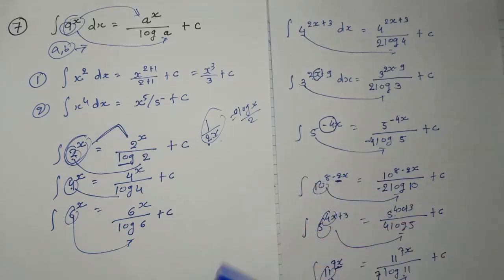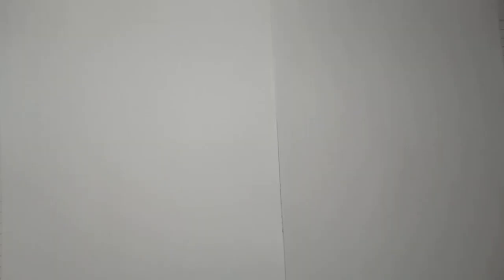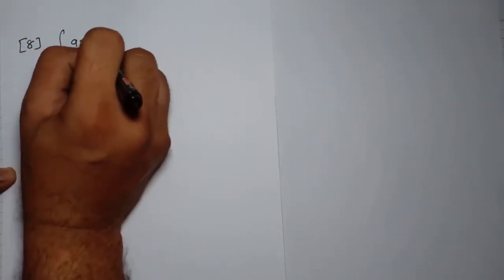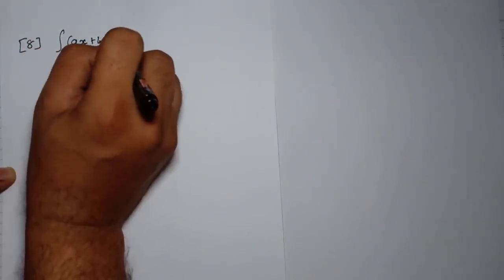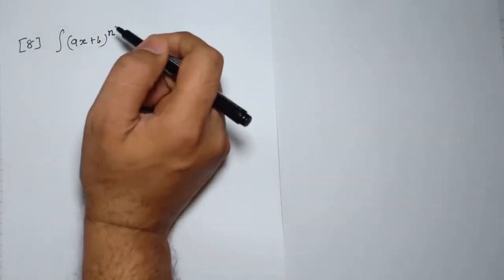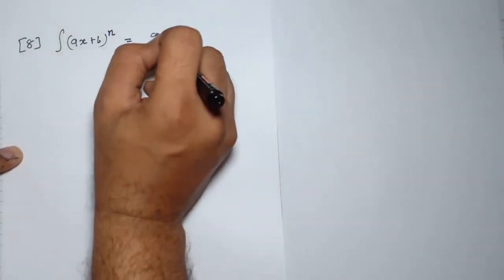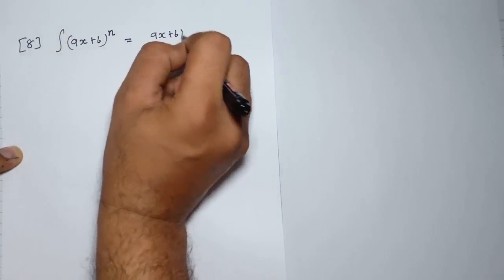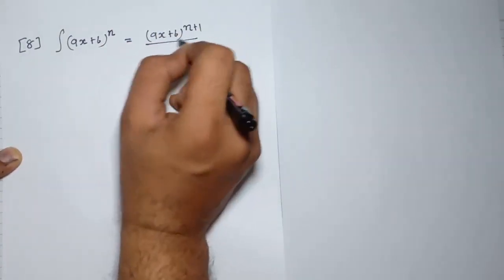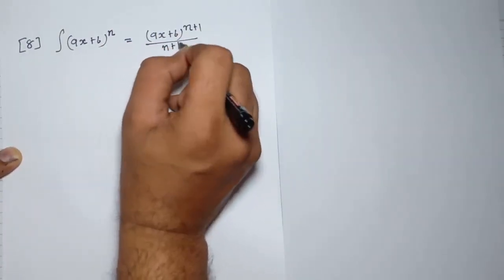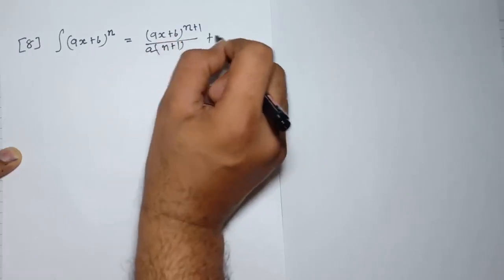We have completed rule number 7. Now we are going to solve rule number 8. Rule number 8: the integration of (ax + b) raised to n. The answer is (ax + b) raised to n plus 1, divided by n plus 1, divided by a, plus c.